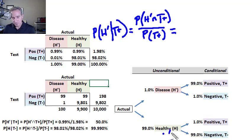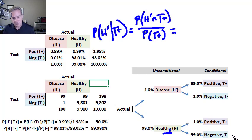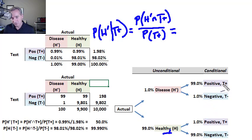For the healthy population, the 99% accuracy gives a specificity of 99%: if the patient is healthy, there is a 99% conditional probability that the test comes back negative — a true negative. This also implies a 1% conditional probability of a false positive. So to summarize: true positive and true negative are 99% (sensitivity and specificity respectively), while false negative and false positive are each 1%.